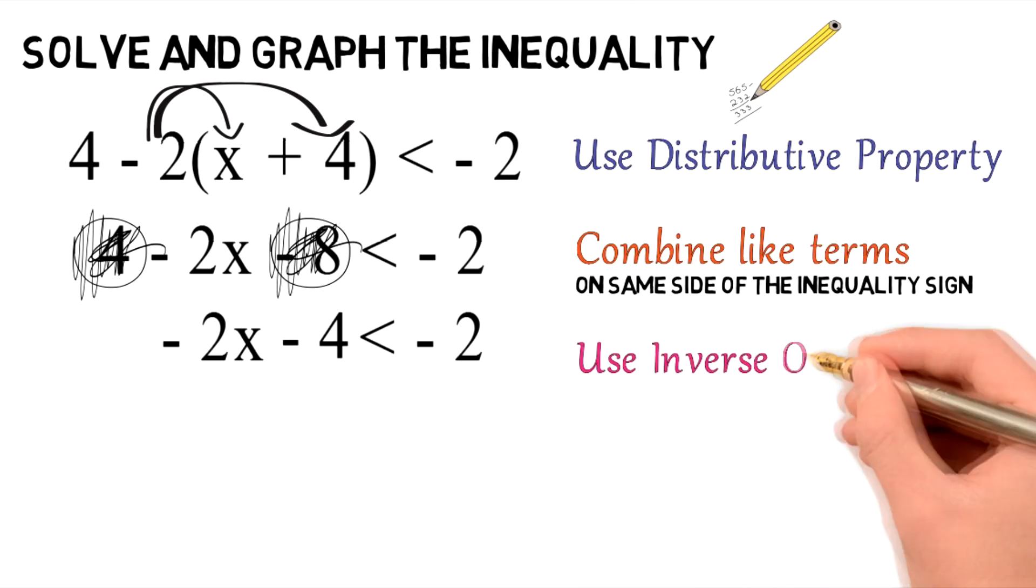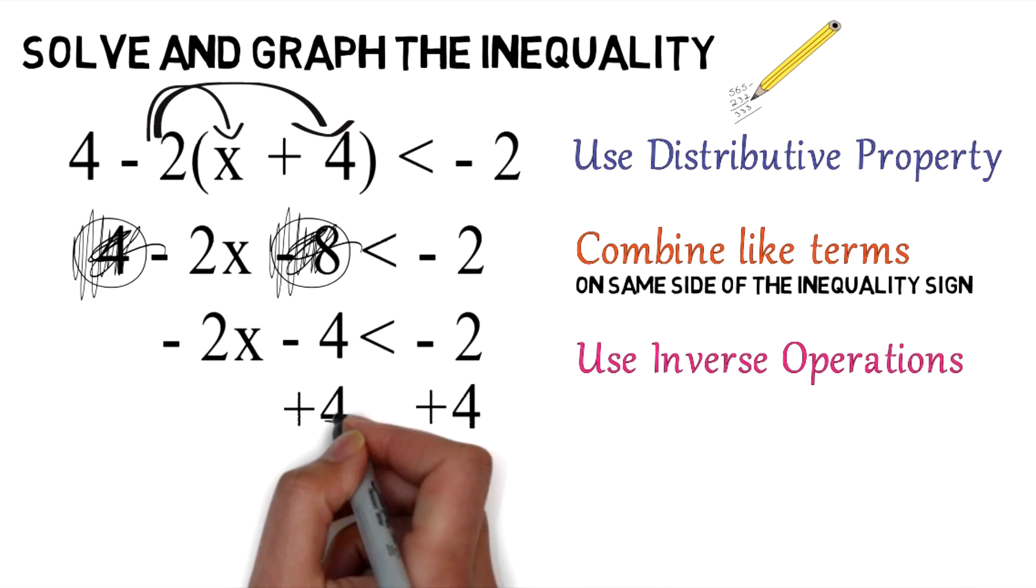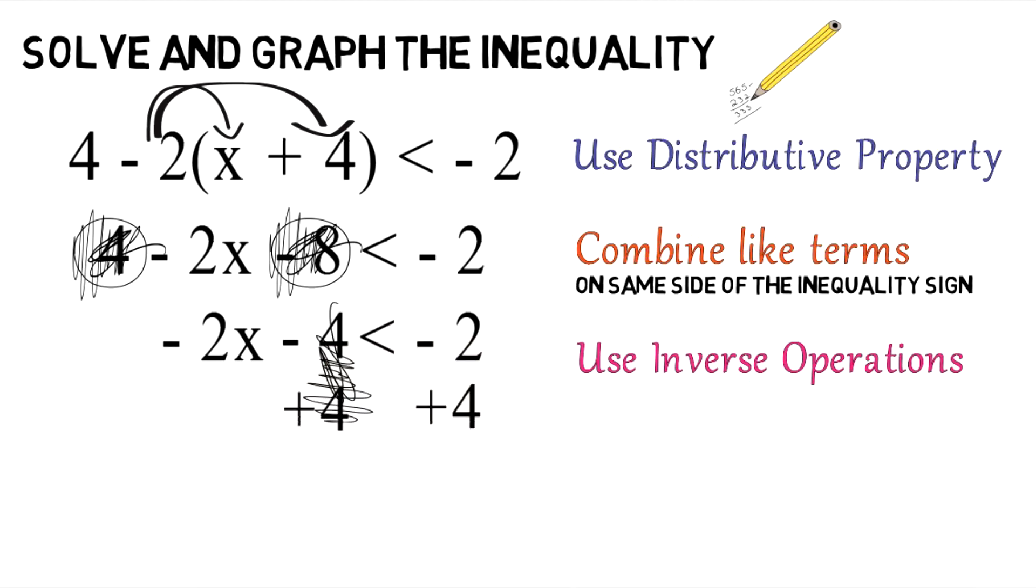At this point, you want to use inverse operations to isolate the variable, so let's add 4 to both sides of the equation. Negative 4 and positive 4 cancel each other out, and you're left with negative 2x is less than 2.